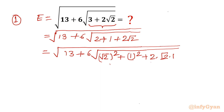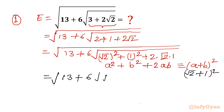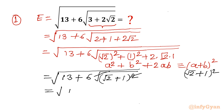Now if you look at this, it matches the pattern a squared plus b squared plus 2ab — a perfect square formula, (a plus b) whole squared — where a is root 2 and b is 1. So this complete radicand I will replace with (root 2 plus 1) whole squared. So we have square root of 13 plus 6 times (root 2 plus 1) whole squared. Now we can cancel the square with the square root.